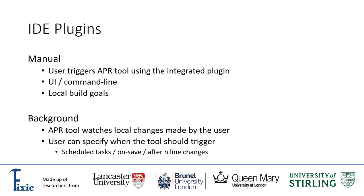A background plugin would actively check for issues in real time and can be optimized such that it only concerns itself with changes the developer has introduced. One limitation to background tasks could be the additional resource consumed by allowing the tool to run continuously, which could be problematic if hardware limitations exist. However, this can largely be mitigated by allowing developers to configure the tool to only trigger once certain criteria have been met, for example after the file has been saved, after N lines of code have been added, modified or deleted, or as a scheduled task that executes after a predetermined delay.